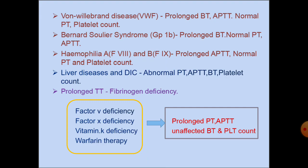In liver diseases, coagulation factors are produced in the liver. As there is liver damage, these coagulation factors are not produced. Hence, there is prolonged PT, APTT, bleeding time, and reduced platelet count.